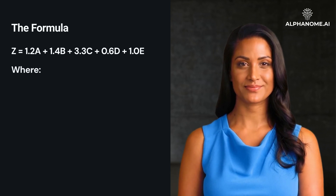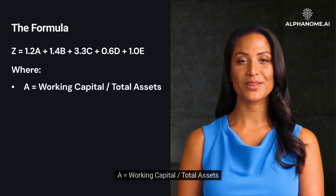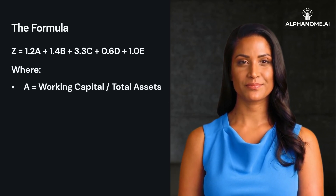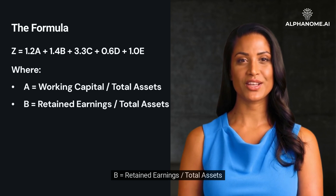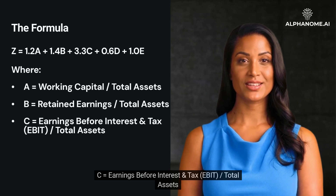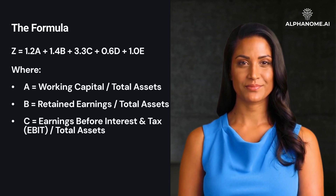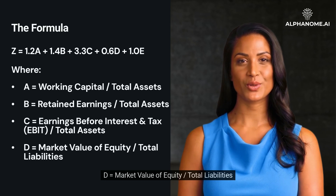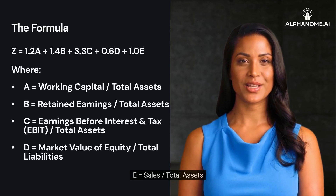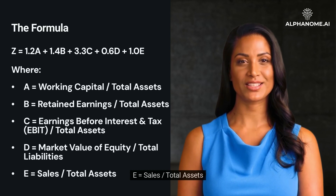Where: A = Working Capital divided by Total Assets. B = Retained Earnings divided by Total Assets. C = Earnings Before Interest and Tax (EBIT) divided by Total Assets. D = Market Value of Equity divided by Total Liabilities. E = Sales divided by Total Assets.